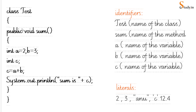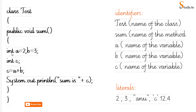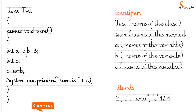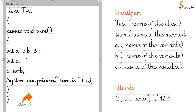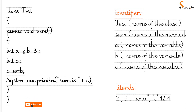We'll understand the meaning of identifiers and literals through this program. We have written a program with a class 'test' and a sum method or function. Here we are taking two variables: int a = 2, b = 3 followed by a semicolon, which is a statement terminator. Similarly we are taking another variable int c.